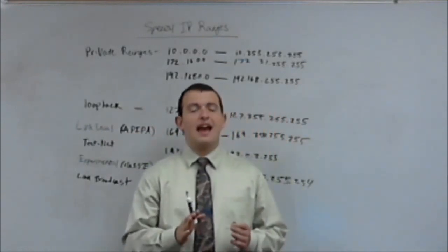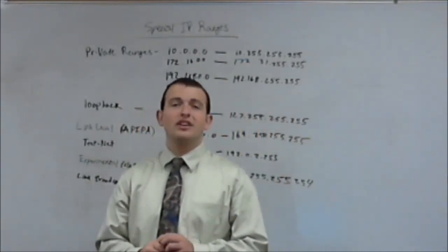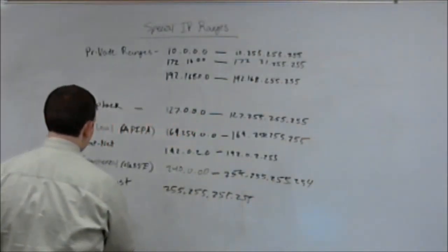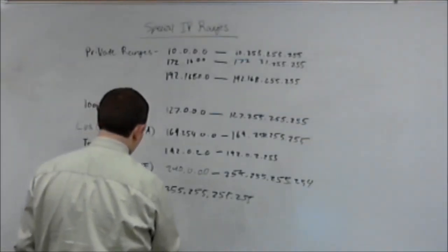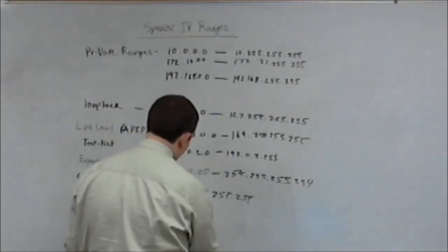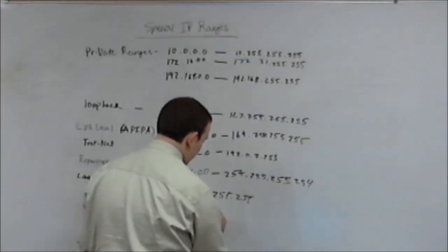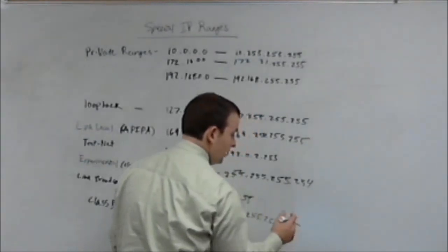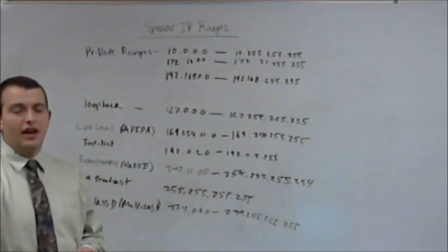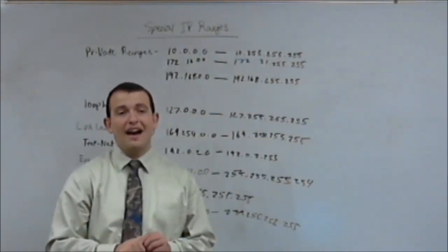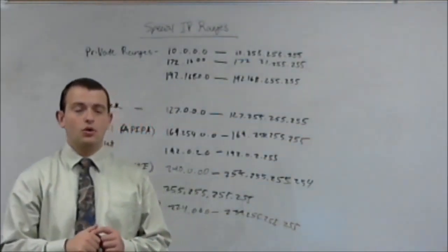Alright, we only have one more set of reserved addresses. This set of reserved addresses is what we call the class D address, or the multicast address range. So class D, or multicast, takes place from your 224.0.0.0 all the way up to 239.255.255.255. And remember, the first range in there, the 224.0.0.0 up to 224.0.0.255 is your link local and everything else is global.